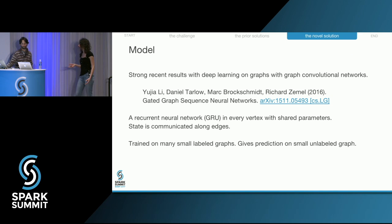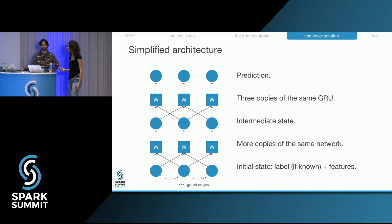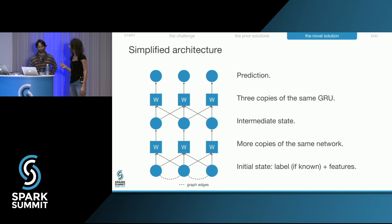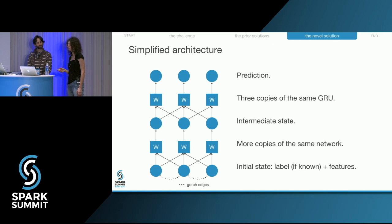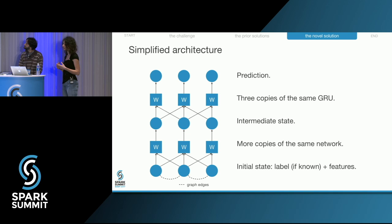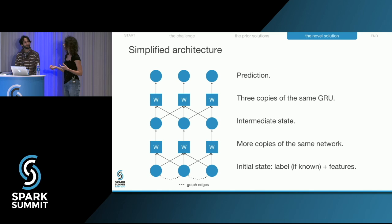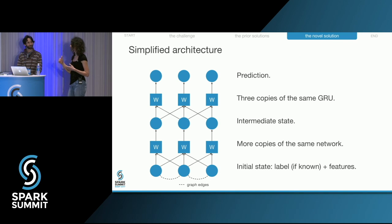Each column in the diagram corresponds to a vertex; time goes from bottom up. The circles are state vectors and the boxes are the neural network. At the beginning, the state vector is the label — the age — if it is known. Then the state vector is sent along the edges and serves as the input for the next iteration. We do this a fixed number of times — here just two times. At the end, the last state vector contains the predictions. And the network used in each vertex and each step is always the same network — they share weights, so if we change the weights during training, they change the same way everywhere.